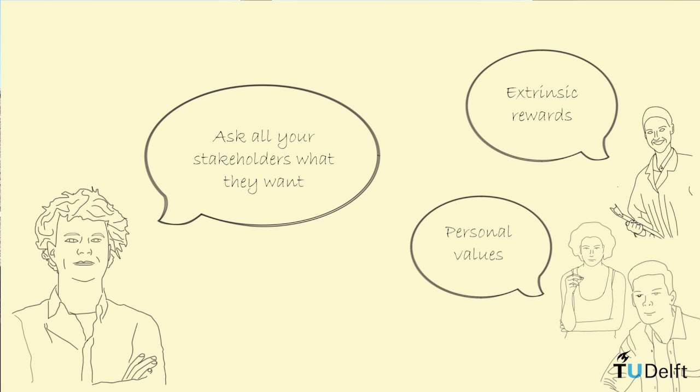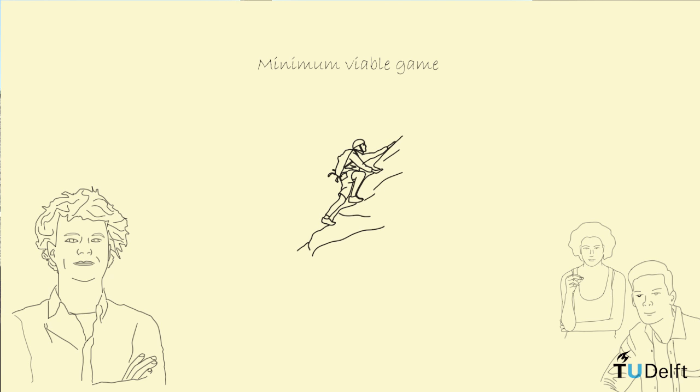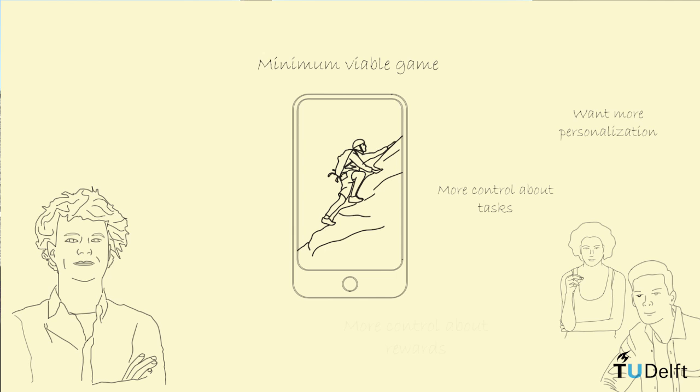But they both thought that wagers would work well. So we designed a first minimal viable game in which we used a wager and a metaphor that was a kind of mountain that you could climb towards your goal. We provided some progression feedback and rewards, and we tested it first with students if it would work. So if all the buttons work on the app, it was a programmed app on the cell phone. And then we also studied it with patients and the results were especially with the patients that they demanded more personalization. They wanted to have more control about the tasks they would set. And they also wanted to have more control about the rewards. So the rewards would be personal. They wanted to set their own rewards.